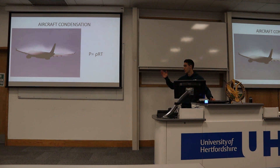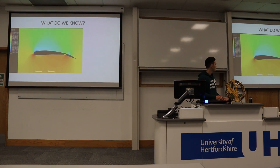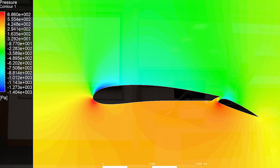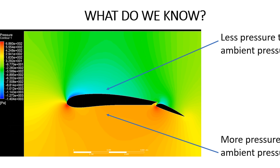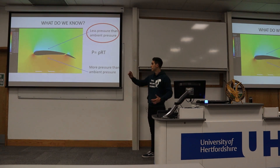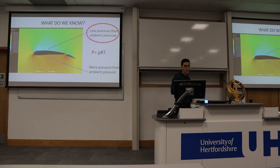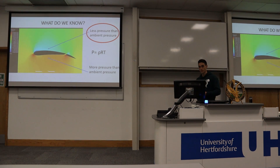We can see that pressure and temperature are directly related. So, if we change pressure, temperature is going to change also. Now, this is a computational fluid dynamics analysis of an airfoil. We can see how pressure is decreasing on the upper part of the wing, and on the lower part of the wing, pressure is increasing. For our purposes, we're just going to focus on the upper part, because if pressure is decreasing, temperature is also decreasing. So condensation appears because, with some specific humidity conditions in the atmosphere, if you decrease temperature, condensation will appear.